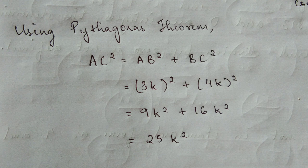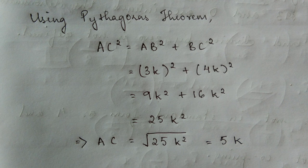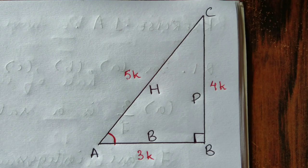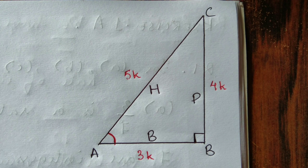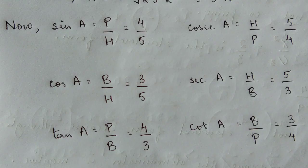Taking the square root of both sides, AC equals the square root of 25k squared, which gives us 5k. So AC equals 5k.